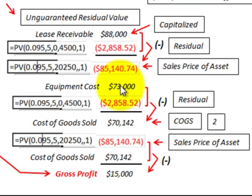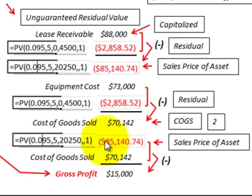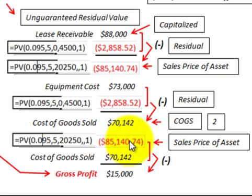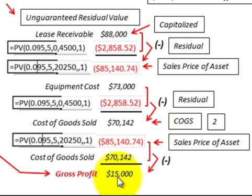Taking the equipment cost of $73,000 and subtracting the present value of the residual amount of $2,858 gives us a cost of goods sold of $70,142. The sales price of $85,140 minus the cost of goods sold of $70,142 gives us a gross profit of $15,000.